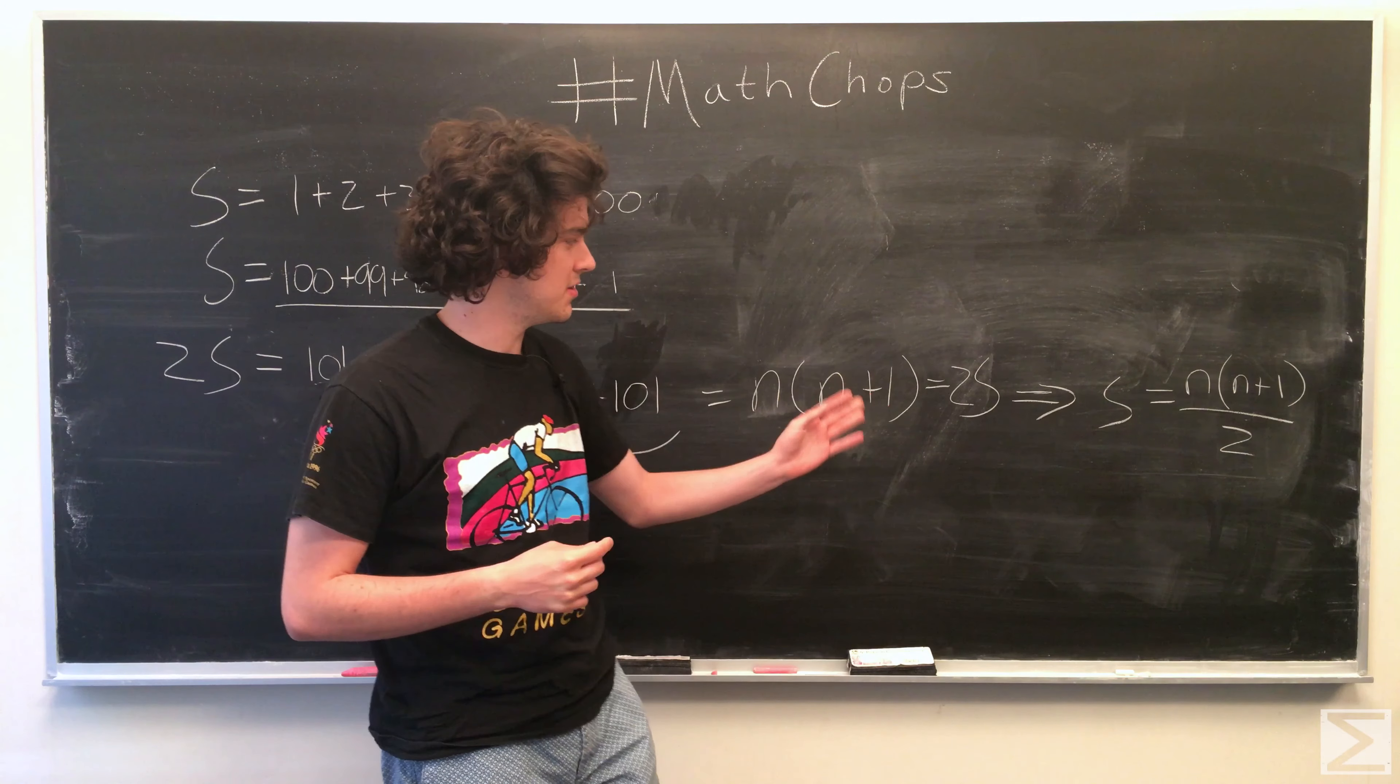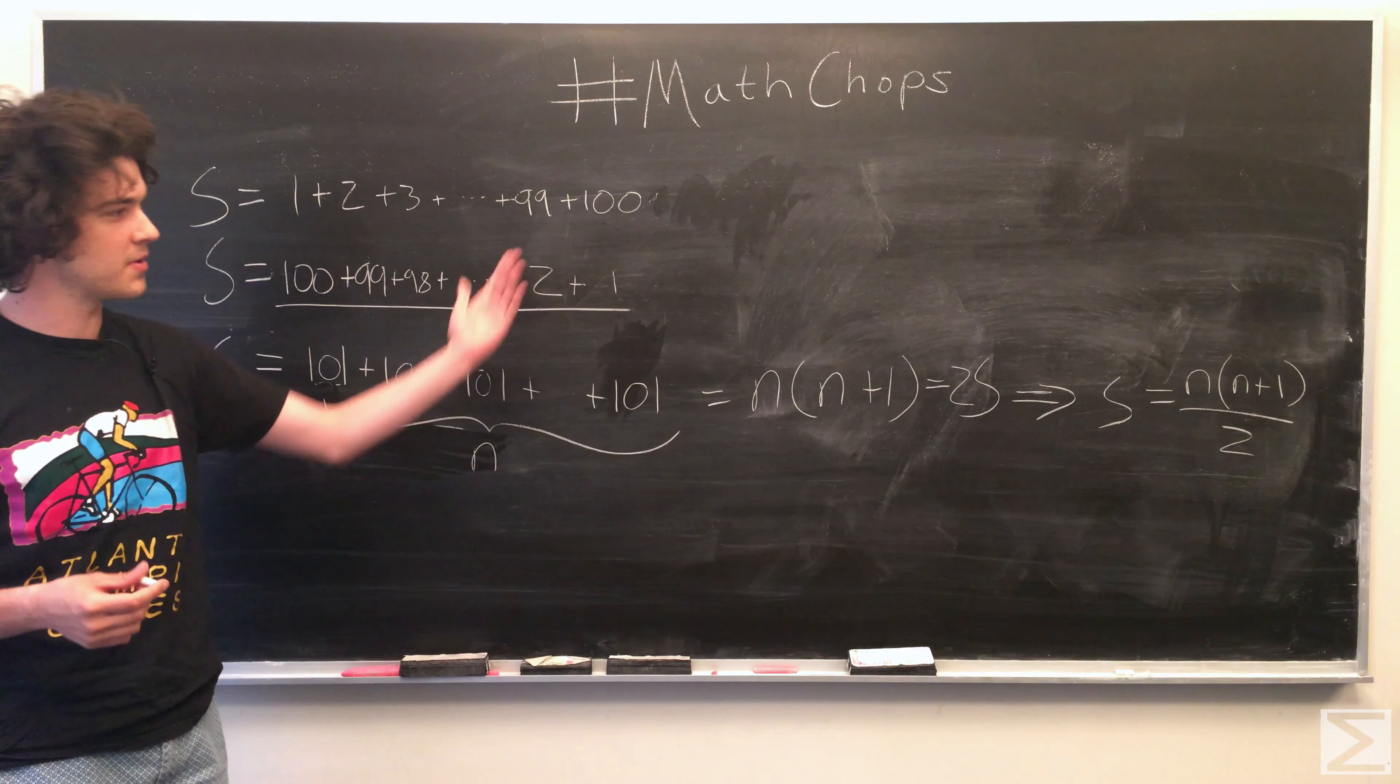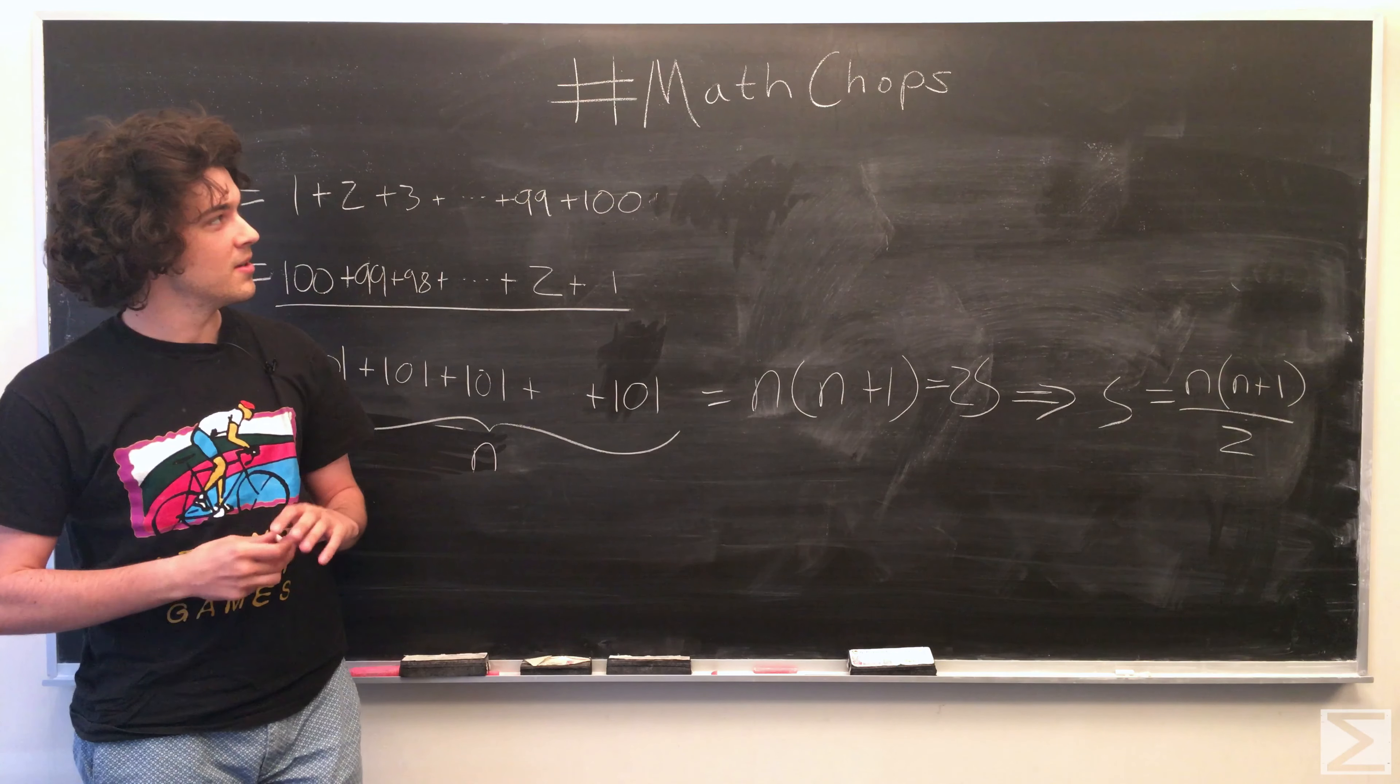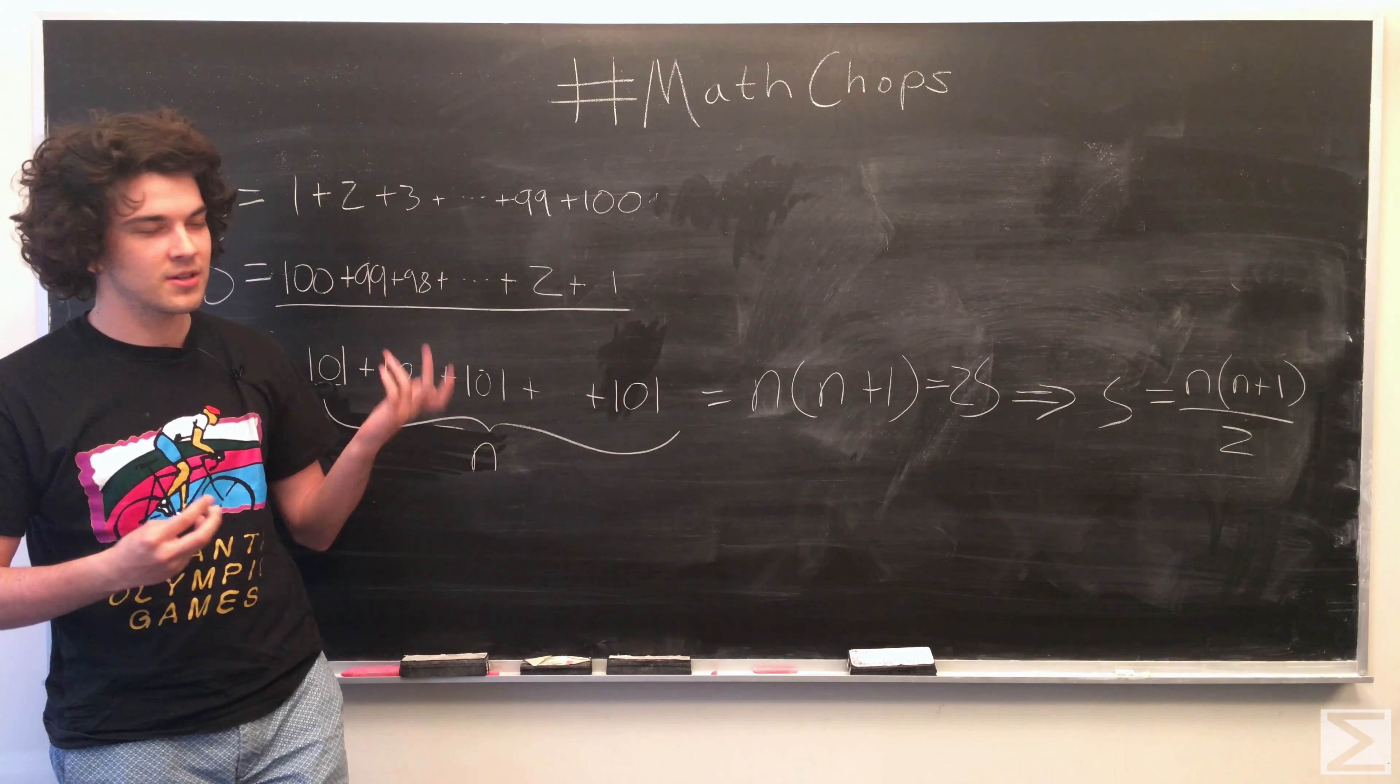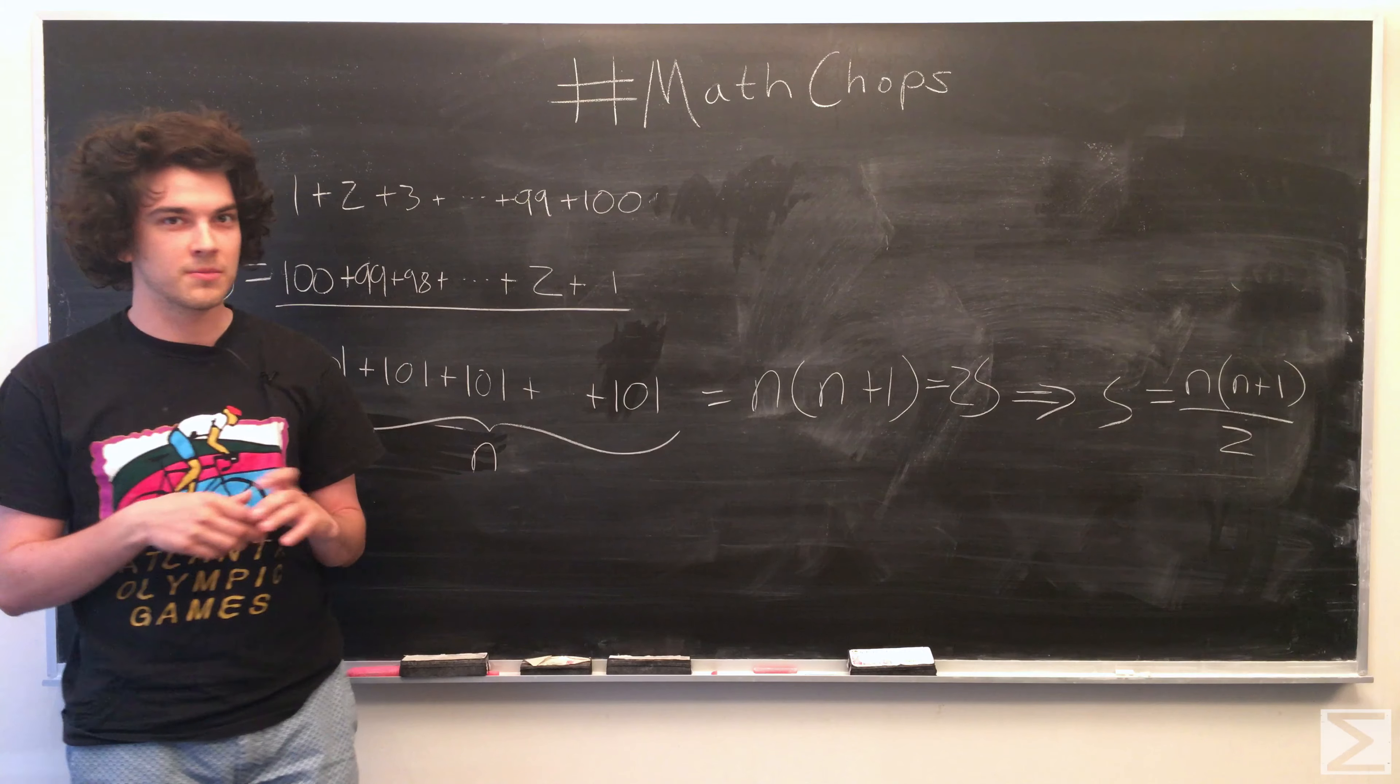So S equals n times (n plus 1) over 2. This is the generalization. I realize I didn't actually show this for 100, but that doesn't matter because everybody has a calculator nowadays. But Gauss didn't, and that's why this is called Gauss's triangle theorem or lemma.